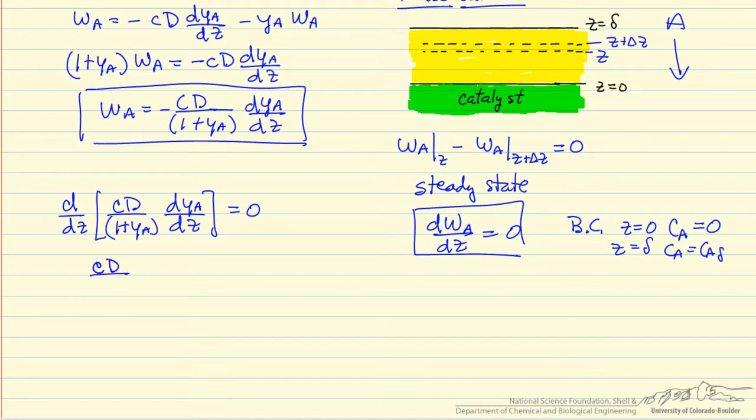So we can take this equation and integrate it, which says that the term inside the derivative is a constant, and we'll eventually need to find the value of this constant. And then we can separate variables, where we have the mole fraction on one side, and we have constants, and dZ on the other side.